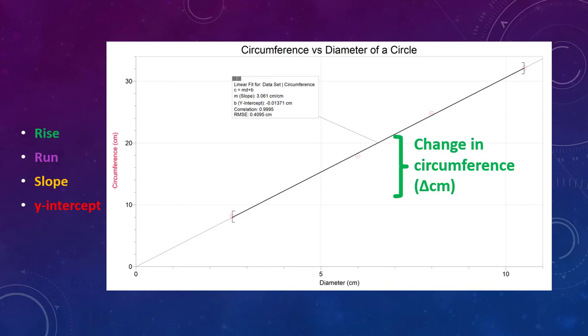We can say that the change in the circumference is the rise of our graph. So as we go up on our graph, as our line increases in the vertical direction on our graph, it is representing a change in the circumference of our circle. So that's the rise of our graph.